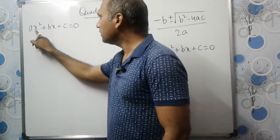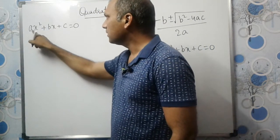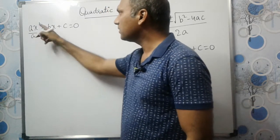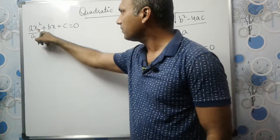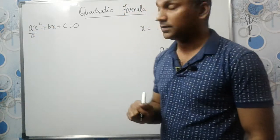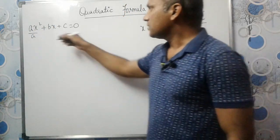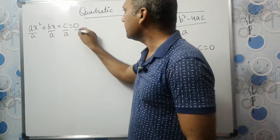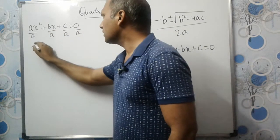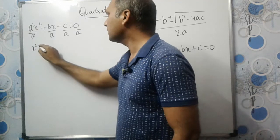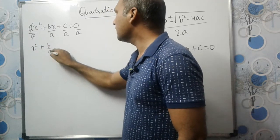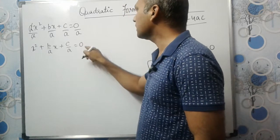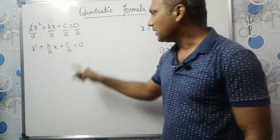This is the standard form. Now we should make the coefficient of x squared equal to 1, as we studied in completing the square. We have 'a' here, so if we divide by 'a', the coefficient of x squared will become 1. So I need to divide both sides by 'a'. This will become x squared — 'a' and 'a' get cancelled — plus b by a times x plus c by a is equal to 0.